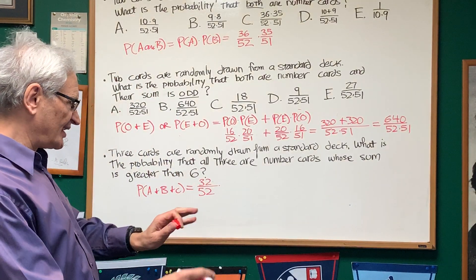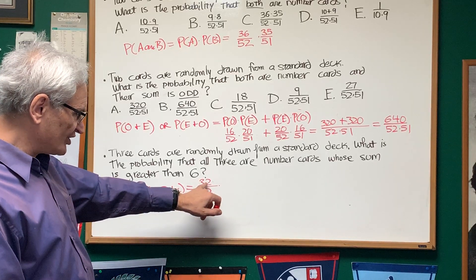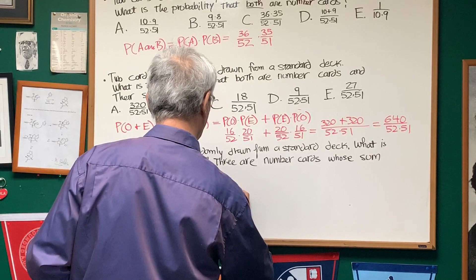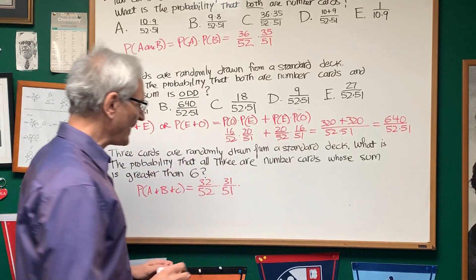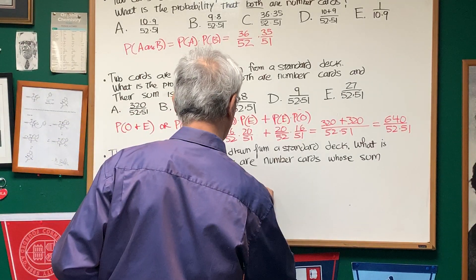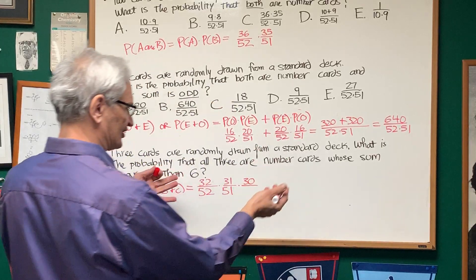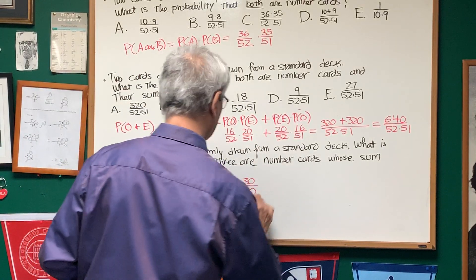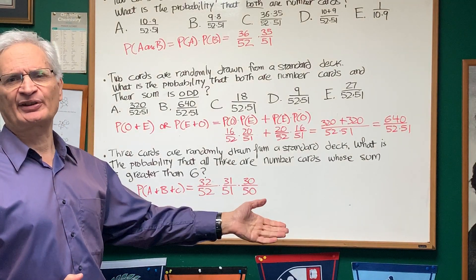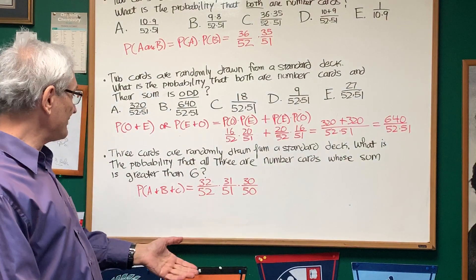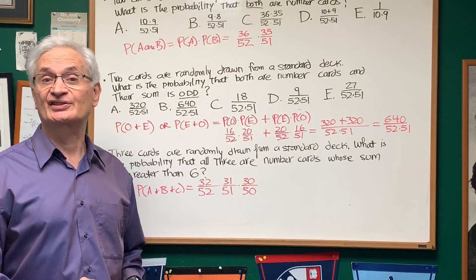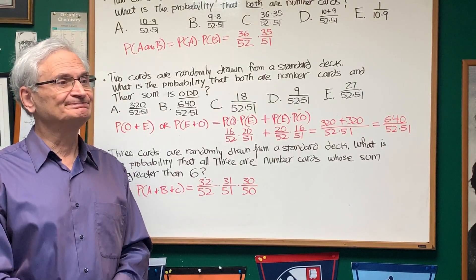Now, we want to have a second number chosen, a second card chosen from that collection of 32. Now, there's only 31 left with 51 cards left. And then, of the remaining cards in the deck, there are only 30 that are going to satisfy with the exclusion of the 2. And there are only 50 cards left. And this product is then going to express the probability of my choosing 3 cards whose sum is greater than 6 because we've excluded all the 2s in our calculations. So, there we are. That's it.